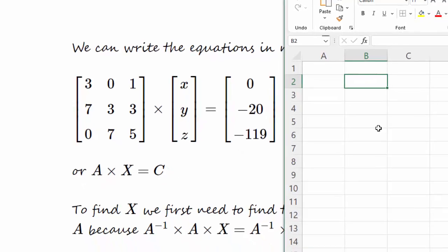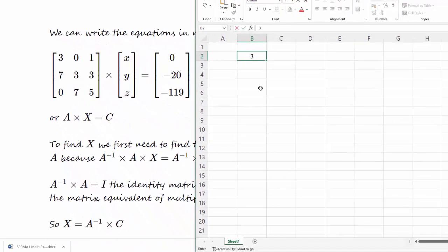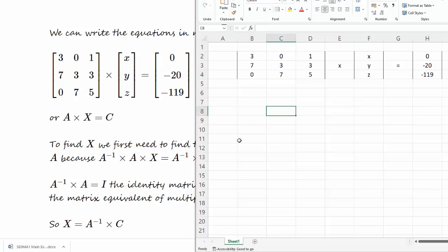So let's call up Excel and now we'll put the numbers into Excel. We've got 3, 0, 1, 7, 3, 3, 0, 7, 5, and we'll say that is times the x, y, and z matrix, and we'll say that's equal to 0, minus 20, minus 119. So we've added borders to make them look a little bit more like matrices.